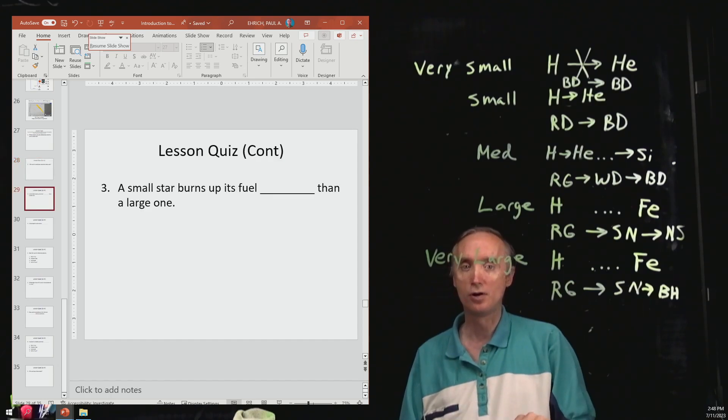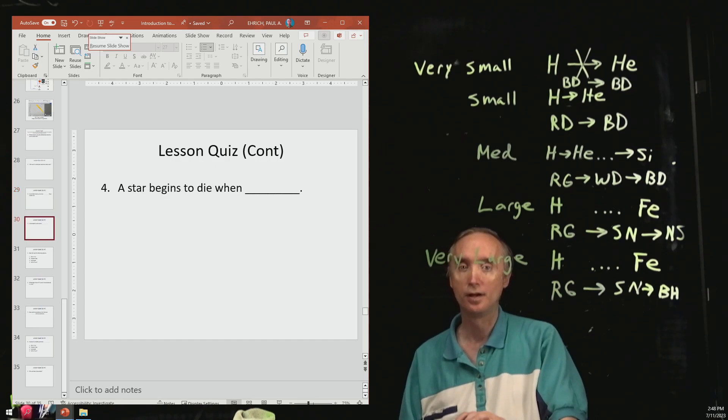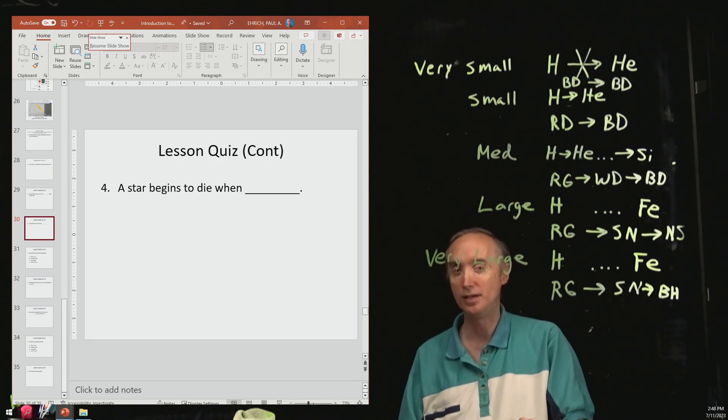A small star burns up its fuel slower than a large one. Slower. Number four. A star begins to die when it runs out of hydrogen. So when it runs out of hydrogen, it's going to begin to die.